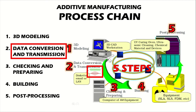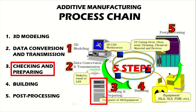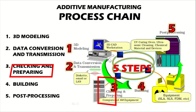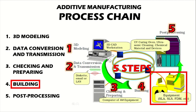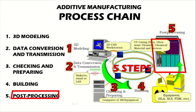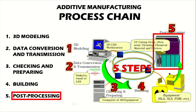The first step is 3D modeling. The second step is converting the 3D digital model into an STL file format and transferring it into the additive manufacturing system. The third step is checking and preparing — the 3D CAD model is checked for errors and prepared by slicing it into the required number of cross sections so the 3D printer can print them layer by layer. The fourth step is building the model, and the last step is post-processing, which includes cleaning, post-curing, and finishing.